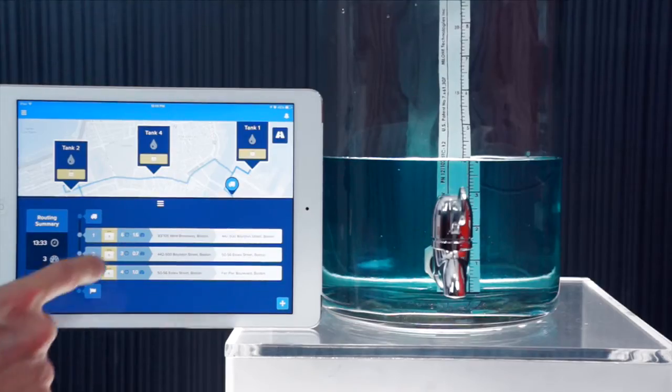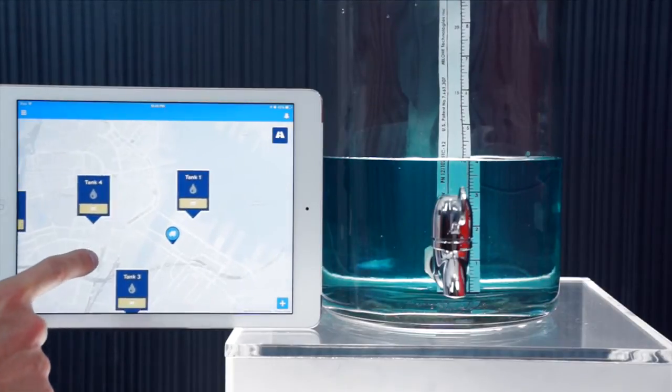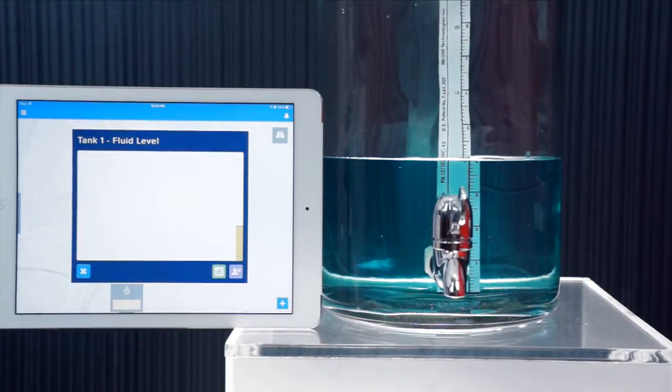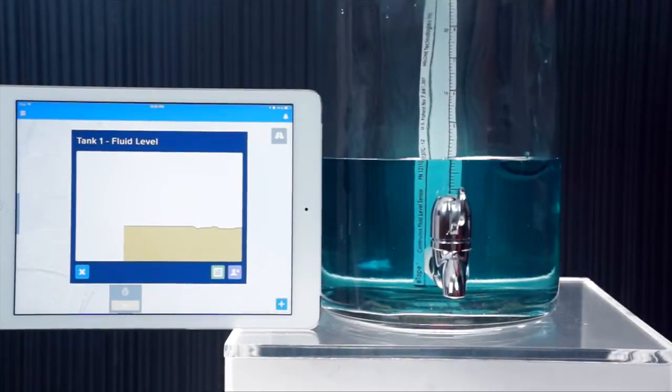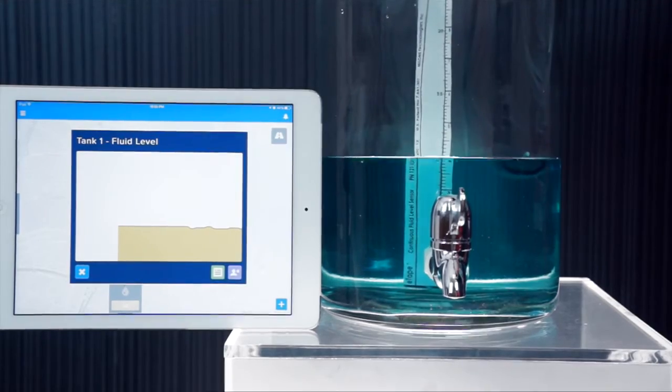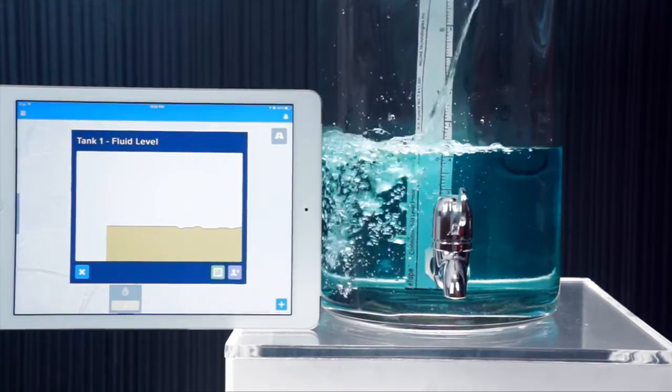Let's close the route summary and go ahead and refill tank 1. If we go over to tank 1's map pin and tap it, it pulls up the second-by-second details. As we start to add fluid back into the tank, it's going to reflect the status in Salesforce 1 in near time.